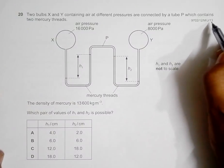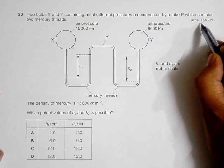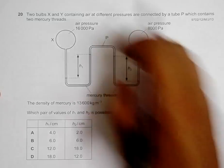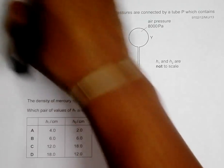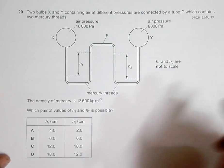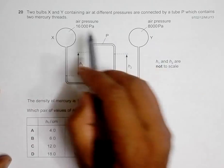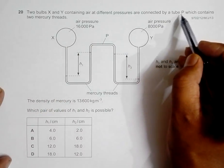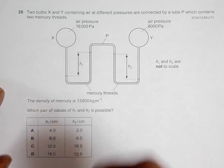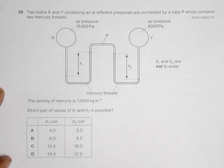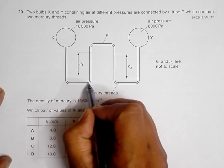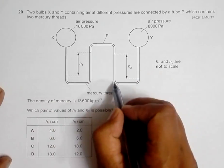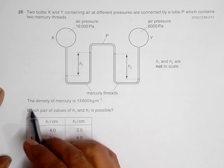This is question 20 from the 2013 major paper 1-2. Two bulbs X and Y containing air at different pressures are connected by a tube P which contains two mercury threads - one thread from here to here and another from here to here.